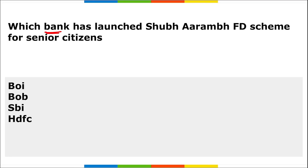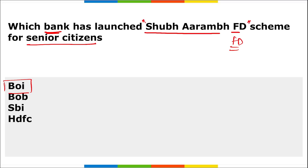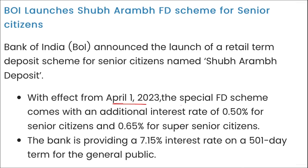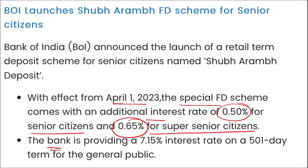Bank of India has launched the Shubh Aram FD scheme — a retail term deposit scheme — specifically for senior citizens. With effect from 1st April 2023, this special FD scheme comes with an additional interest rate of 0.5% for senior citizens and 0.65% for super senior citizens. The bank is providing a 7.15% interest rate on a 501-day term for the general public.